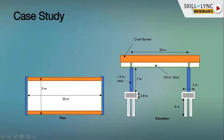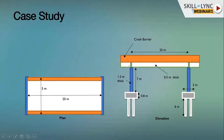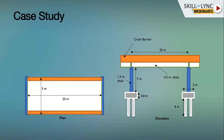Taking a section, in the elevation we can see the crash barrier, and the slab which is 500 mm thick. The center-to-center span is 20 meters, the pier is 1.5 meters thick and 7 meters in height. The foundation consists of a pile cap and piles; the substructure is the pier and the superstructure is above it. There is an elastomeric bearing since it's simply supported, with a gap at each end — that's what makes it simply supported rather than continuous.